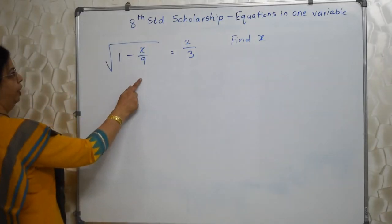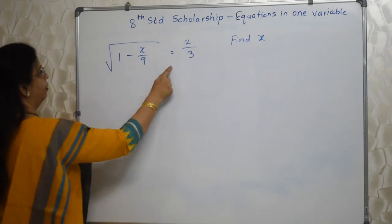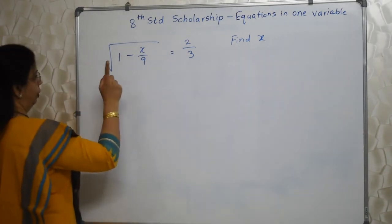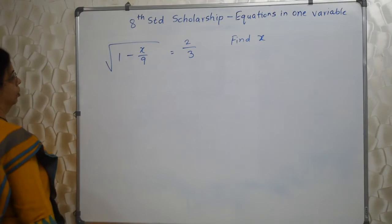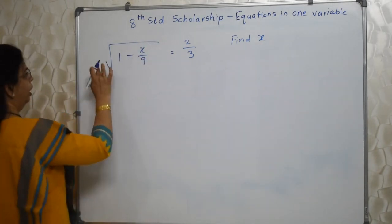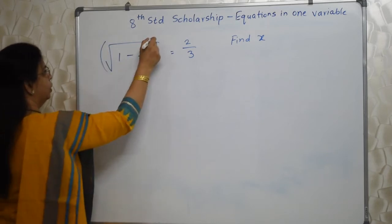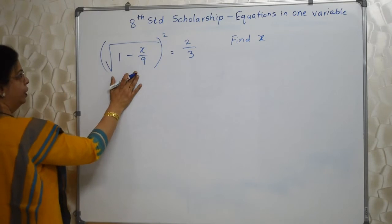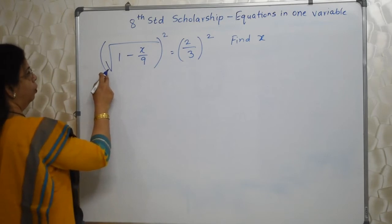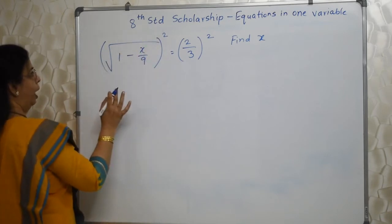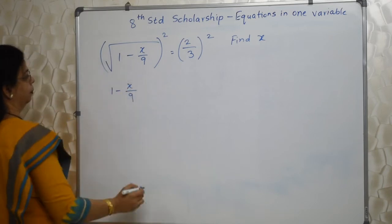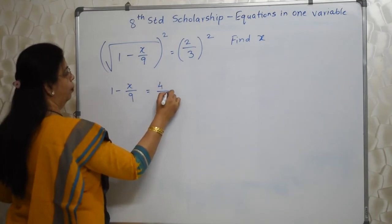Students, see the next sum I have written on the board. They have given this equal to 2 upon 3. Find x. Now here I am sure what is troubling you all is this square root. So let's remove that. Can I just rub it? No. How can I remove this square root sign? By making a square of this. If I am doing a square of this side, I have to or I must do the square of this side. When I do the square root ka square, what happens is this square root sign disappears and whatever is inside remains. And here it is 4 upon 9.